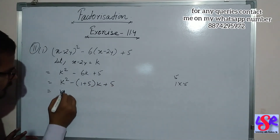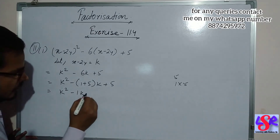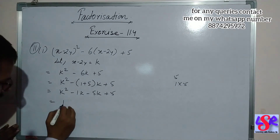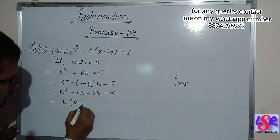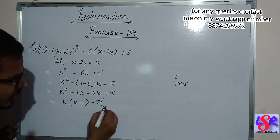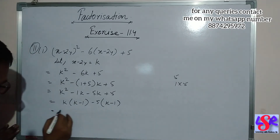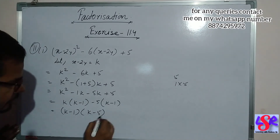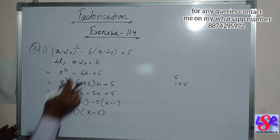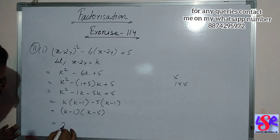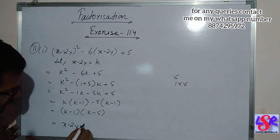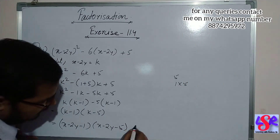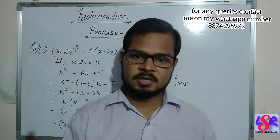So we write this as k square minus k minus 5k plus 5. Opening the bracket: k square minus k minus 5k plus 5. Taking k common from the first two gives k minus 1, and taking minus 5 common from the last two also gives k minus 1. Taking k minus 1 as common, we are left with k minus 5. Substituting back k equals x minus 2y, the answer is x minus 2y minus 1 into x minus 2y minus 5. That's all in this video. Thank you.